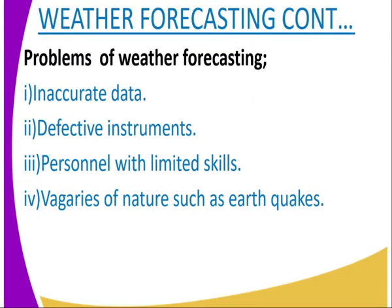Let us look at weather forecasting challenges. They are predicting what is going to happen, but sometimes they face some challenges. Number one is inaccurate data — when the data that is recorded is inaccurate, this ends up giving the wrong information about the weather forecast. Number two is the defective instrument. We have talked about different instruments used to measure the elements of weather. If they have any defect, then whatever you are going to get is inaccurate, and whatever is going to be forecasted could be affected.